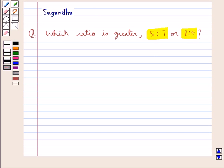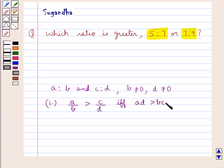Before moving on to the solution, let's discuss the condition used to compare the two ratios. Suppose we are given two ratios A is to B and C is to D where B is not equal to 0, also D is not equal to 0. Then the ratio A is to B written as A upon B is greater than the ratio C is to D written as C upon D if and only if AD is greater than BC.